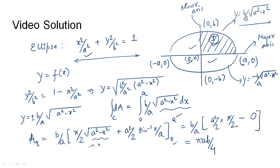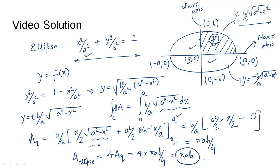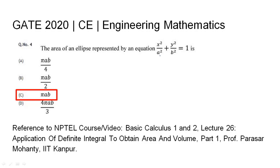This gives the area of one quadrant as πab/4. Since all four quadrants are symmetric, the total area of the ellipse is 4 × πab/4 = πab. We simply frame the equation as y = f(x), use the standard integral in one quadrant, and multiply by four. The area of the ellipse x²/a² + y²/b² = 1 is πab — that is option C.